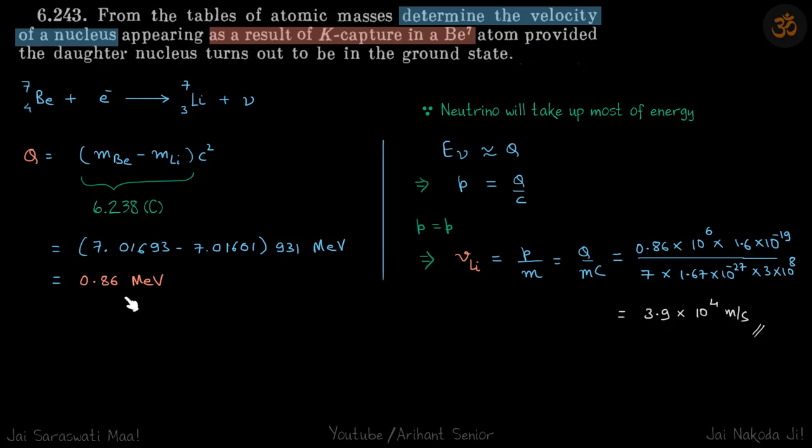So this is the total energy of the reaction which is given to neutrino and this thing, daughter nuclei. Now among these two, neutrino will take up most of the energy because it is massless or like it's a wave, so it will take up most of the energy, but momentum of both is going to be same.